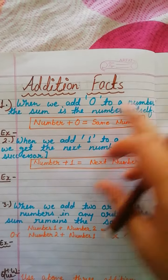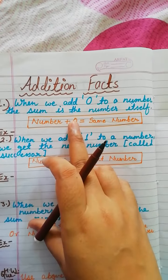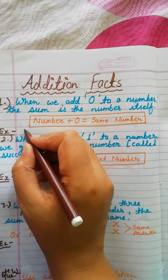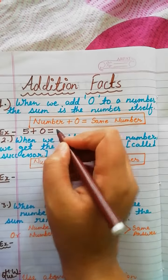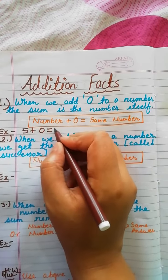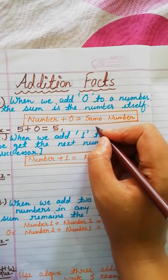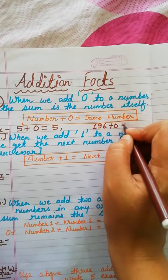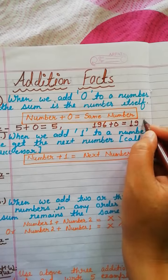The first fact is when we add 0 to any number, the sum is the number itself. For example, if we add 0 to 5, the answer is 5. We can choose any number like 196 plus 0, the answer will be the same number, 196.